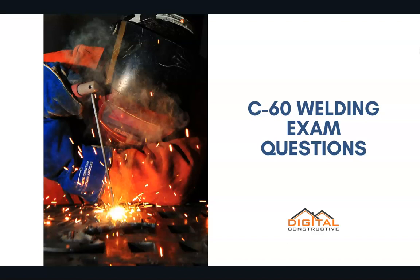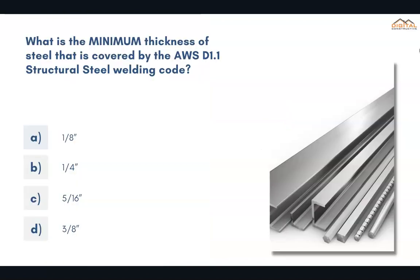Welcome to DigitalConstructive.com. In this video we're taking a quick look at a few C60 welding exam questions. What's the minimum thickness of the steel that is covered by the AWS D1.1 Structural Steel Welding Code? The correct answer is 1/8 inch.